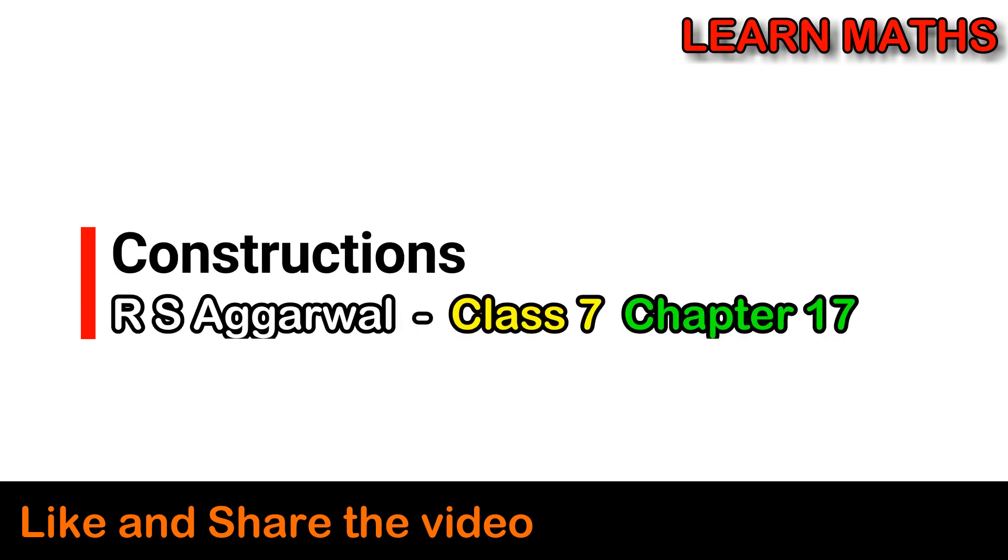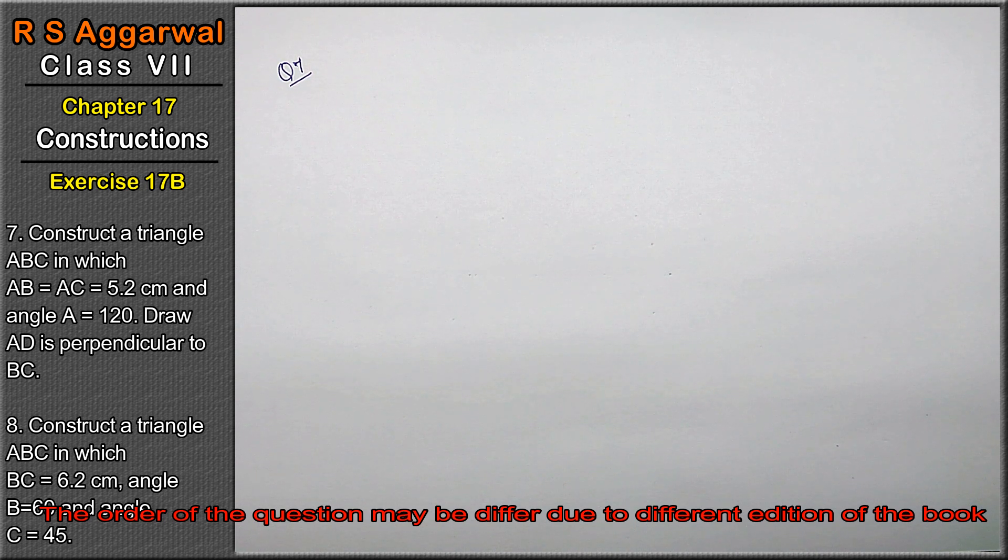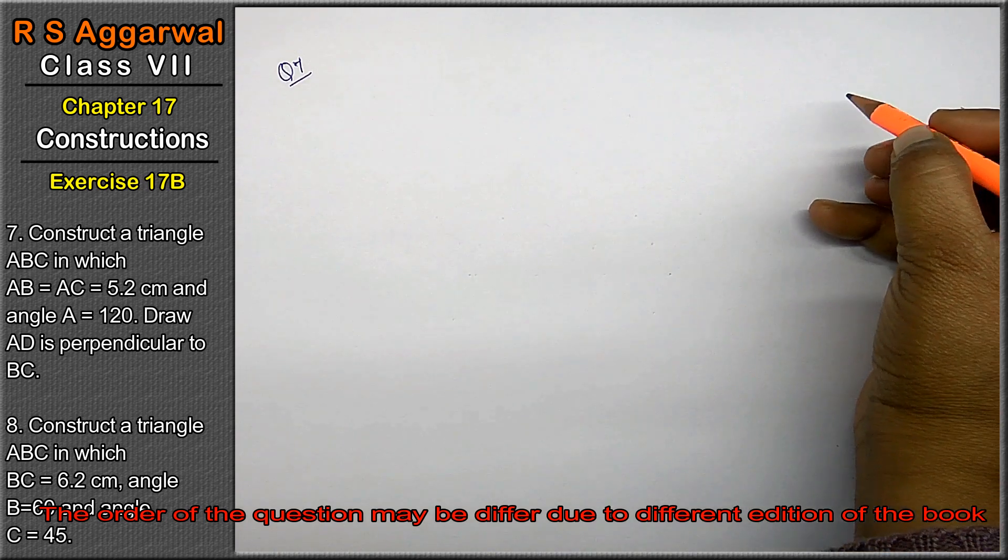Let's do question number 7 of exercise 17B, that is construction. Question number 7 is construct a triangle ABC in which AB equals to AC. Let's make a rough figure.